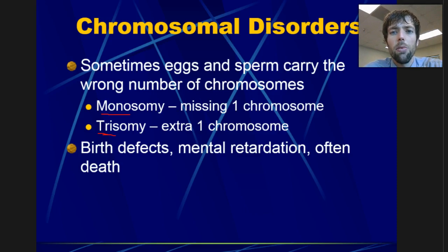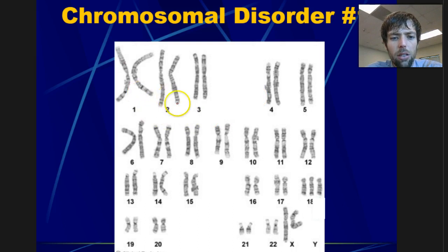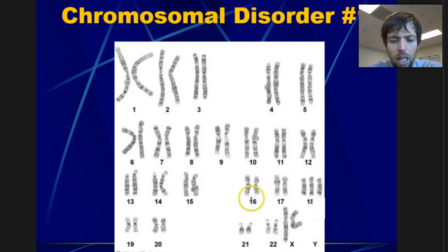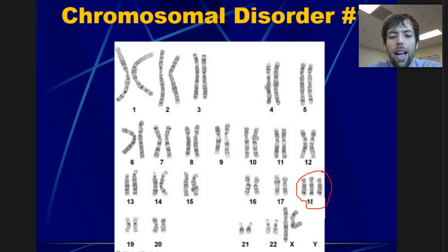Here's chromosomal disorder number one. Take a few seconds and scan the karyotype to see where something is out of place. Looking through the pairs — one, two, three, four, five... scanning through pairs 13, 14, 15, 16, 17... wait a second. What do we have here? One, two, three — that's a trisomy. This disorder is trisomy 18. Do we have a boy or a girl? I have two X's and no Y, so that means I have a girl with trisomy 18.